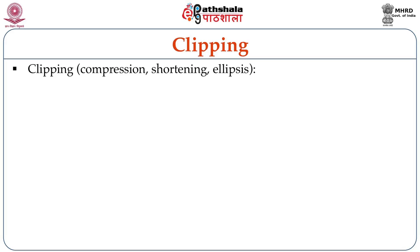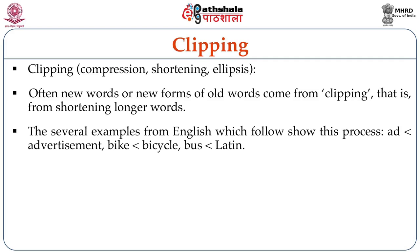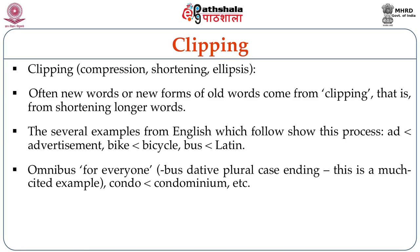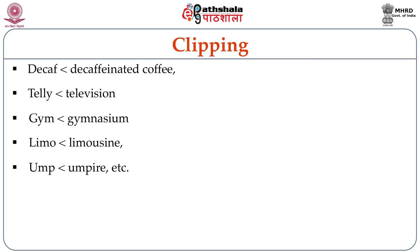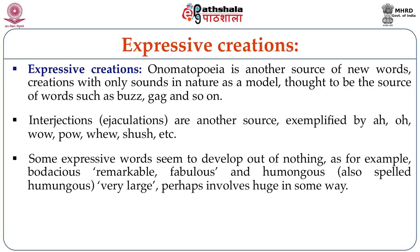The next type is clipping, meaning compression, shortening, or ellipsis. New words or new forms often come from clipping — shortening longer words. Examples: 'bike' from bicycle; 'bus' from omnibus; 'tele' from television; 'gym' from gymnasium; 'limo' from limousine. The short forms are generally preferred over longer ones. Onomatopoeia is another source of new words — creations with sounds in nature as a model, thought to be the source of words such as 'buzz' and 'gag.' Interjections like oh, ah, and wow are also a source, though highly limited.